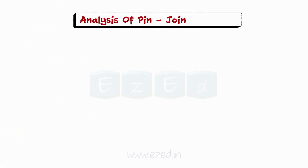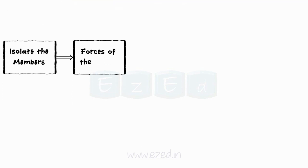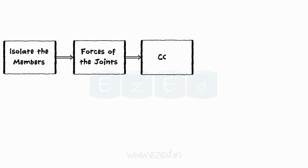The following problem will be helpful to understand the concept behind analysis of a pin jointed frame — the way we isolate the members, show the forces at the joints, and finally apply conditions of equilibrium to the member to calculate the forces in the joints of the frame.